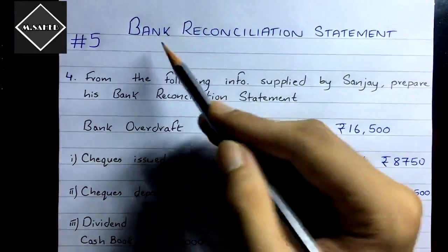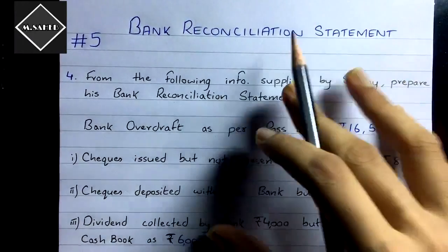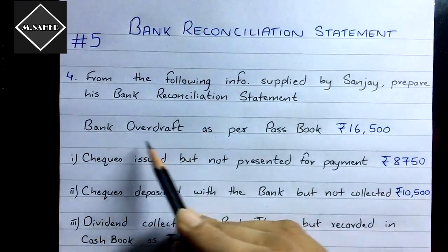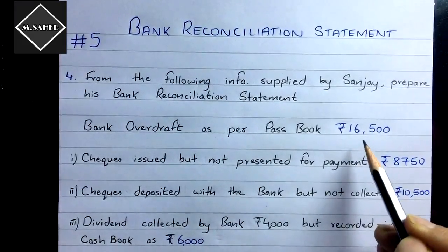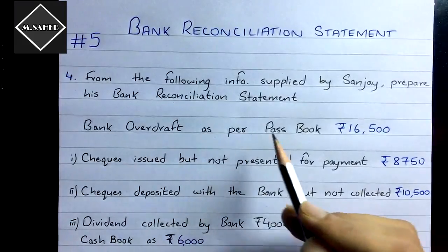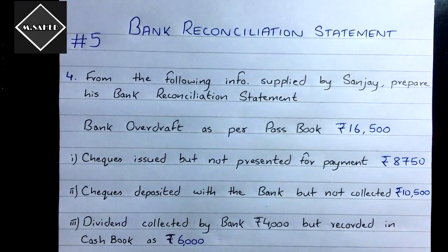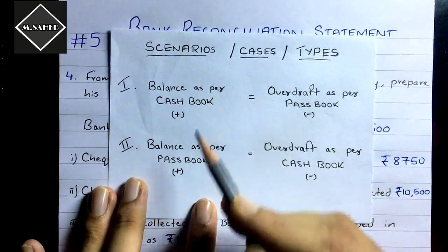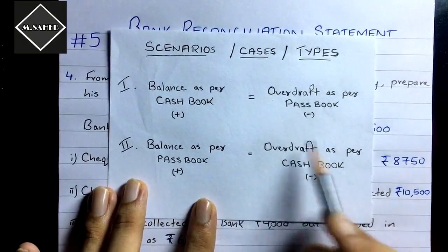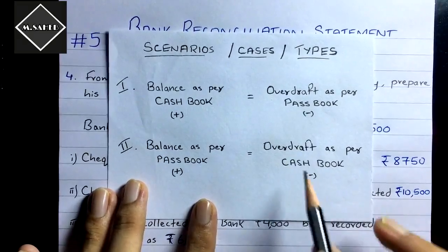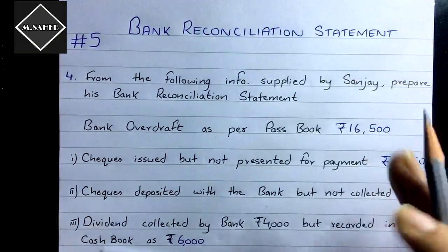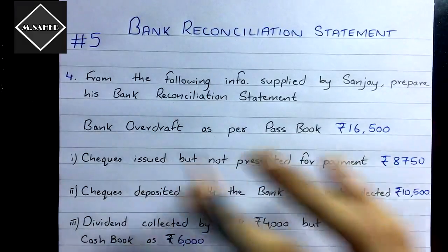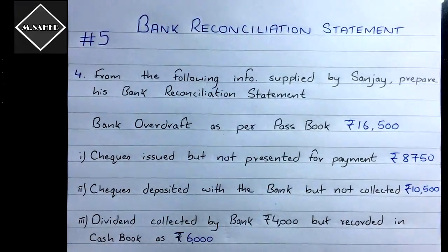Hi everyone, this is the fifth video of Bank Reconciliation Statement. In this video we are going to see how to prepare the BRS when overdraft as per passbook is given, or when unfavorable balance as per passbook is given. In the previous videos we have seen three problems: balance as per cashbook, balance as per passbook, and overdraft as per cashbook. Please watch those videos first before watching this one.